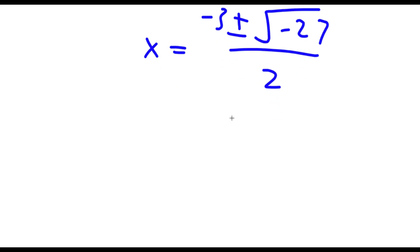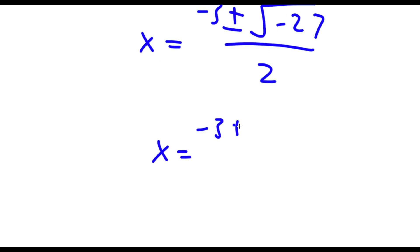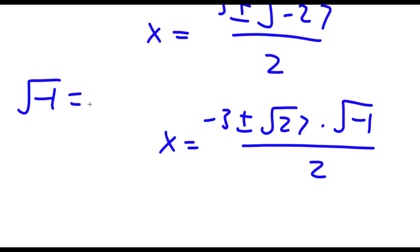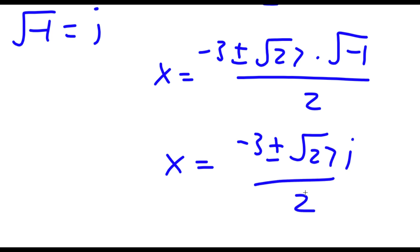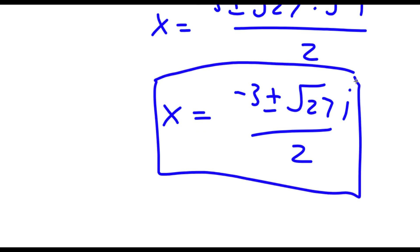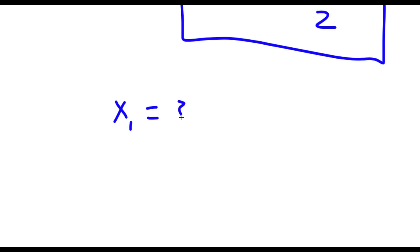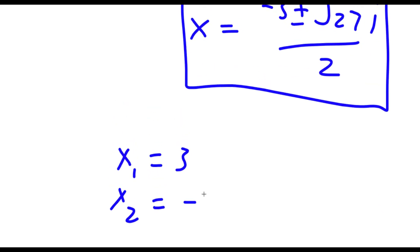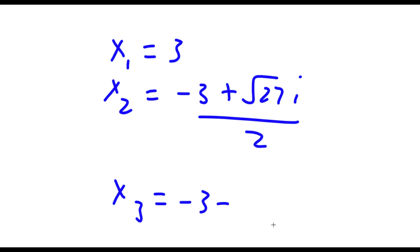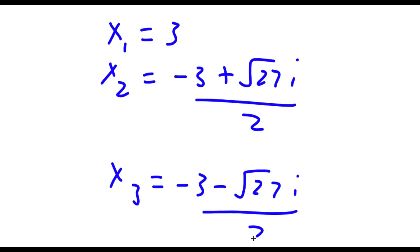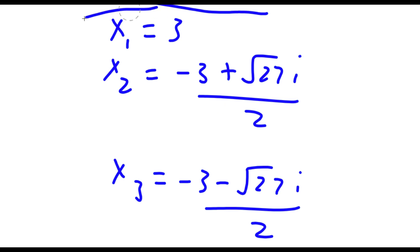Now the square root of negative 27 I can rewrite as the square root of 27 times the square root of negative 1. And the square root of negative 1 is the imaginary number i. So replacing that, I get negative 3 plus or minus the square root of 27 times i, over 2. So my three solutions are: x equals 3, x equals negative 3 plus the square root of 27 times i over 2, and x equals negative 3 minus the square root of 27 times i over 2.